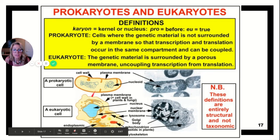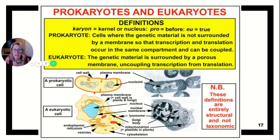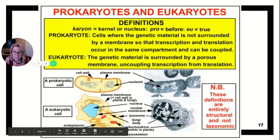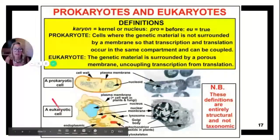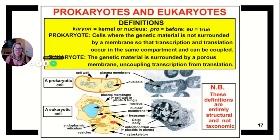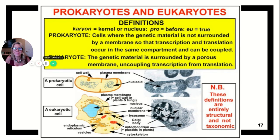These are not drawn to scale — this prokaryotic cell is about the size of the mitochondria shown in the eukaryotic cell. You can see the differences: prokaryotes don't have membrane-enclosed organelles like eukaryotic cells do. This is a transition slide into eukaryotic cells in our second video. Hope you're having a great day!